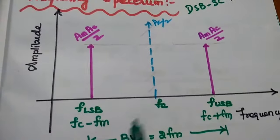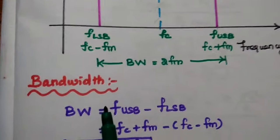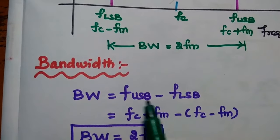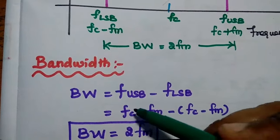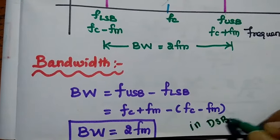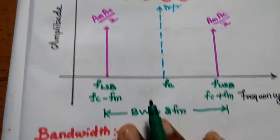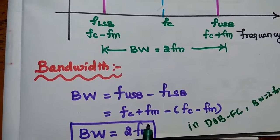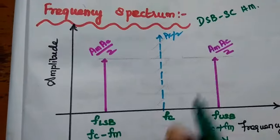The bandwidth of the suppressed carrier method is 2FM — that is, two times the modulating frequency. Bandwidth is the range of frequencies between the upper sideband and lower sideband: (FC + FM) − (FC − FM) = 2FM, since FC cancels. Even in double sideband with full carrier, the bandwidth is also equal to 2FM. So in DSB-SC we are only suppressing the carrier, but the bandwidth remains the same — that is the drawback of the suppressed carrier method.